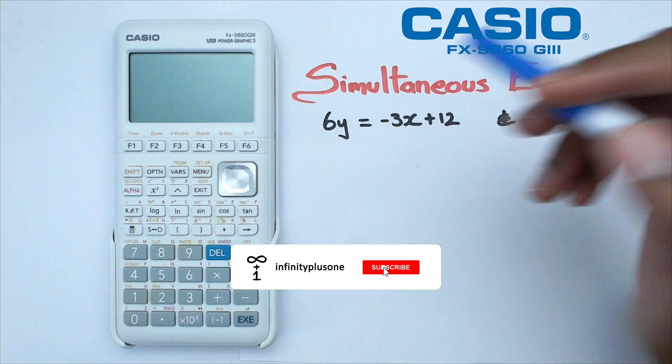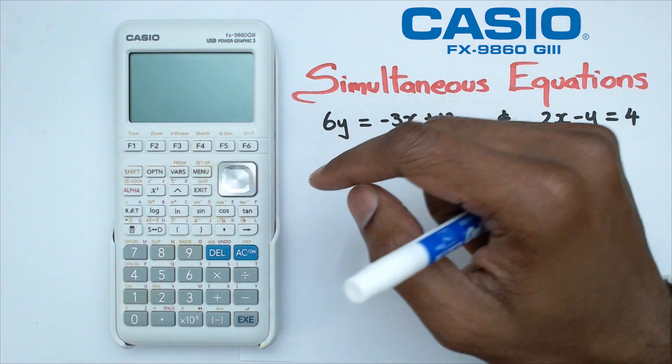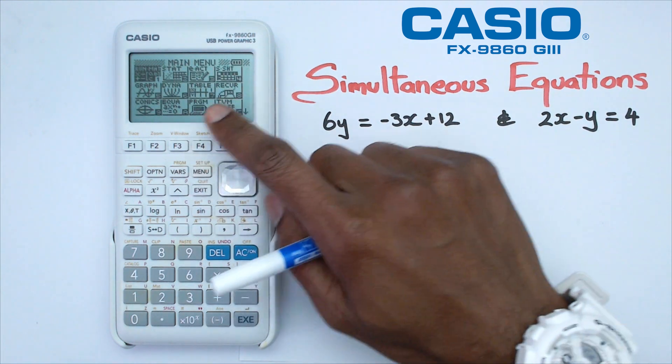Now for this particular question, I've chosen these two equations here. So in the graphics calculator, what you would want to do is just click it on and go into main menu and we're going to go down to equation.